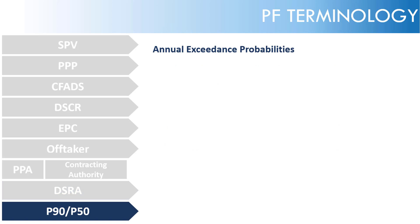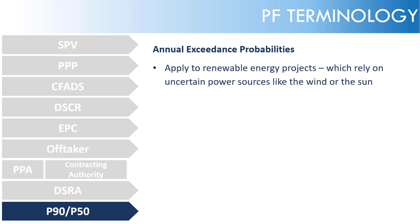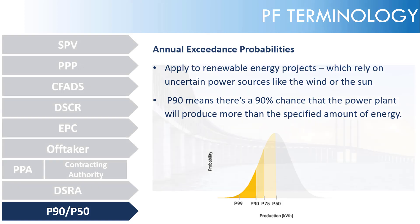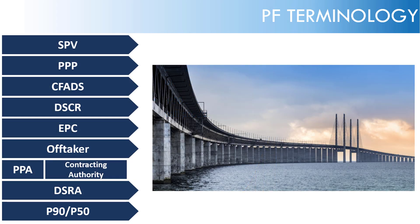P90 and P50 refer to annual exceedance probabilities. They apply to renewable energy projects which rely on uncertain power sources like wind or sun. A P90 means there's a 90% chance that the power plant will produce more than the specified amount of energy. It's a very helpful statistical measure to help lenders get a degree of certainty over the revenues the project will produce, and therefore the cash flow available to pay down the debt service. That's it on the terms and the primer — let's now dive into the project finance simplified model and have a look at an airport case study.